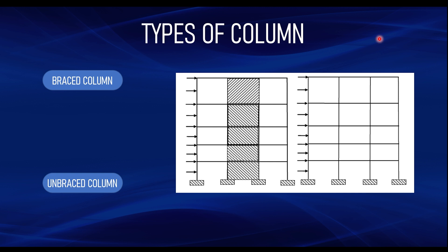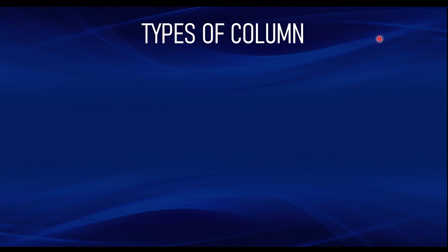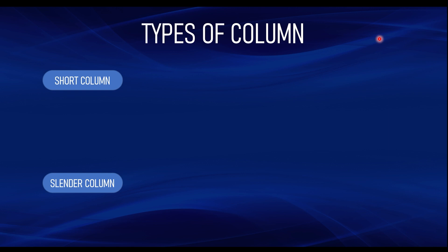We also have another type of classification based on the geometry or dimensions of the column. A column can be short or slender. This is based on the geometry of the building and the sizing of the column relative to the loads applied. This can be differentiated using the slenderness ratio. The Eurocode provides a formula to determine the slenderness limit. Once you know the slenderness limit, you compare the slenderness ratio of the column to it. If the slenderness limit is exceeded, the column is considered a slender column. If the slenderness ratio is less than the code limit, the column is said to be a short column.